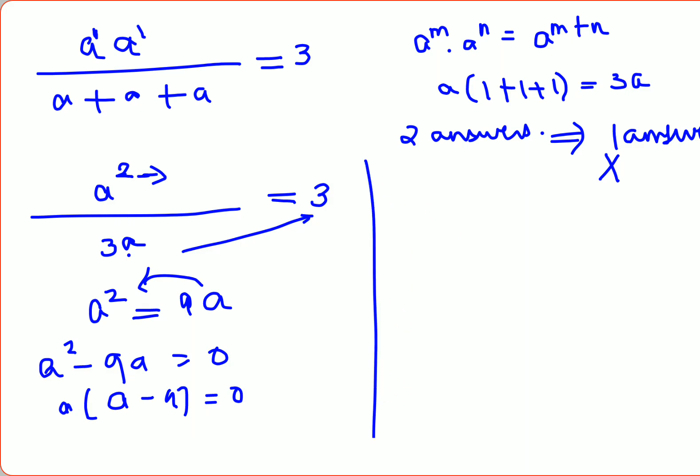So from here you can say a equals 0, or a minus 9 equals 0, which will say a equals 9 or a equals 0. And this is how you have gotten 2 values of a.